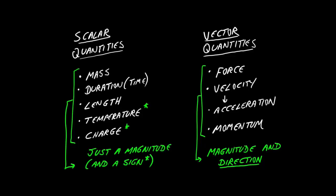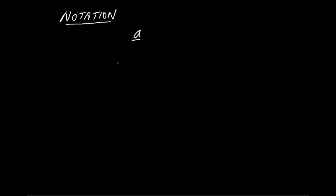We're going to think about how we manipulate vectors. The notation we're going to use: I'll use a symbol such as the letter A, but I'm going to underline it. So an underlined symbol indicates a vector rather than a simple number. When I need to specify that vector, it's going to be three-dimensional, and I'll write the three numbers in column form.